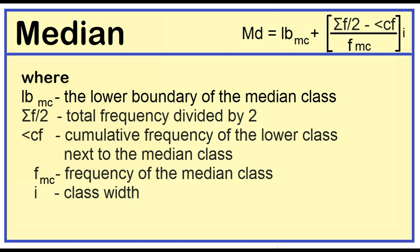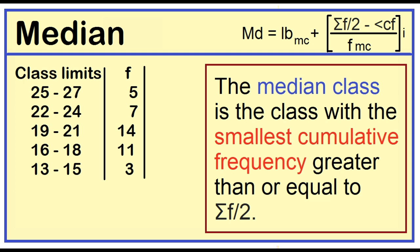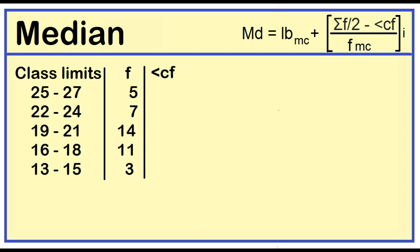Median is equal to the lower boundary of the median class plus the quantity one-half of the total frequency minus the cumulative frequency of the lower class next to the median class, divided by the frequency of the median class, times the class width. The median class is the class with the smallest cumulative frequency greater than or equal to one-half of the total frequency.